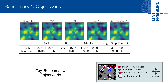We evaluated inverse action value iteration and inverse-Q learning on the common object world benchmark and compared to maximum entropy inverse reinforcement learning. In this image, you see the corresponding state values under the true reward function for each of the approaches as well as for the ground-truth optimal policy. All approaches were trained on a dataset reflecting the true underlying Boltzmann distribution of the MDP.